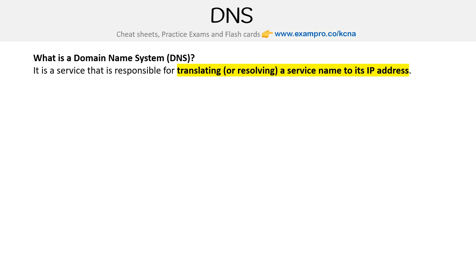So this is in the context of Kubernetes, because DNS stuff is complicated. We could spend like a micro course just talking about DNS. But I just want to focus on the last part — translating and resolving a service, so a Kubernetes service name to an IP address.